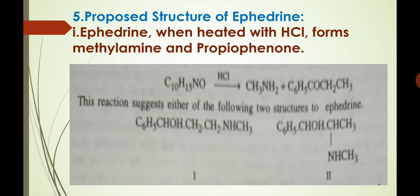With the help of these points, we can propose the structure of ephedrine. When ephedrine is heated with HCl, it forms methylamine and propiophenone. These two compounds are indicated as compound 1 and compound 2. These reactions suggest that ephedrine can have one of the following two structures — structure 1 or structure 2.